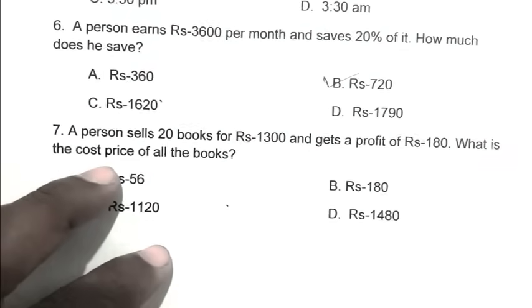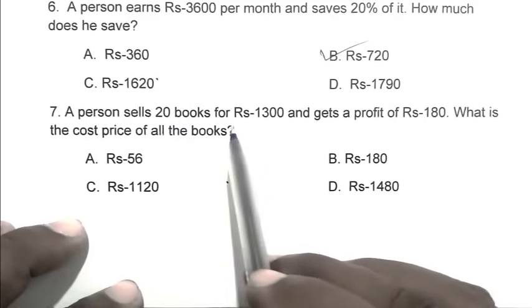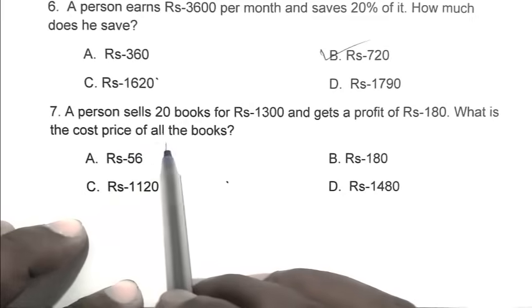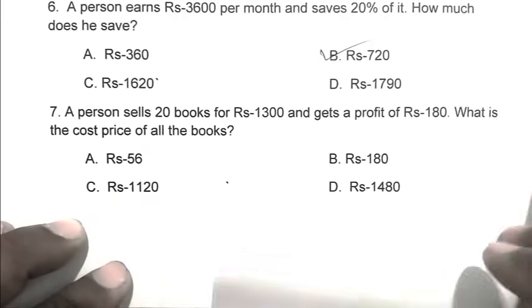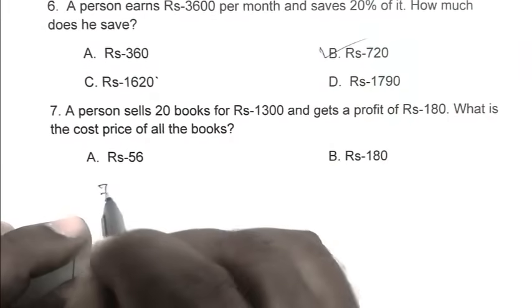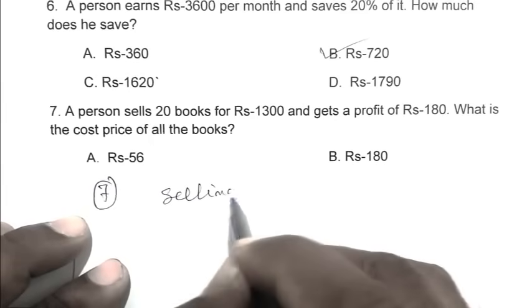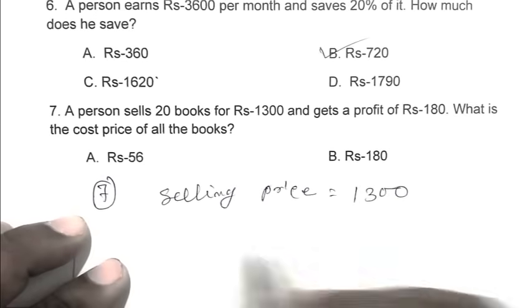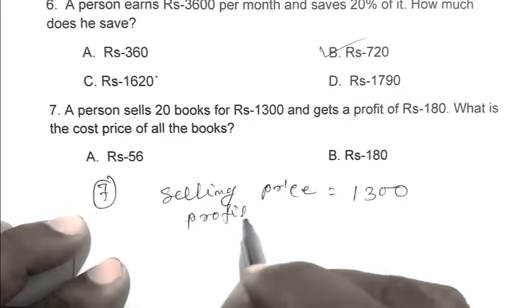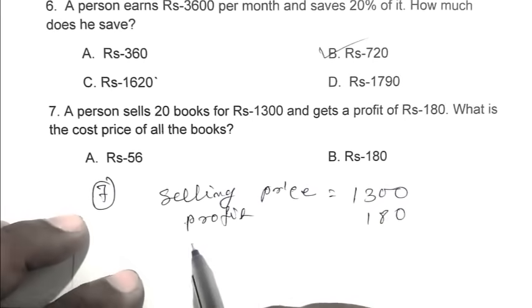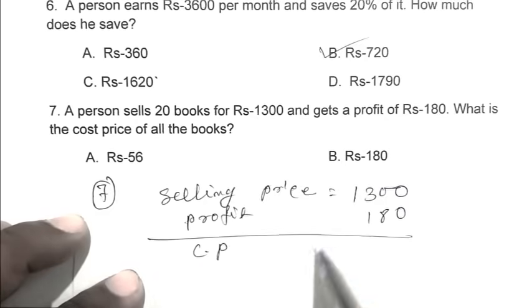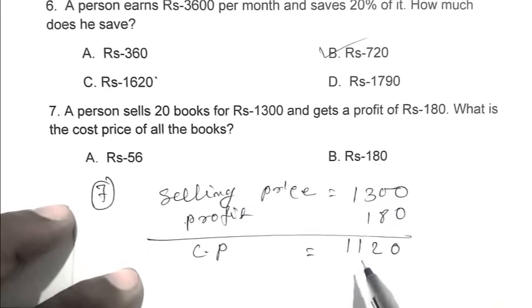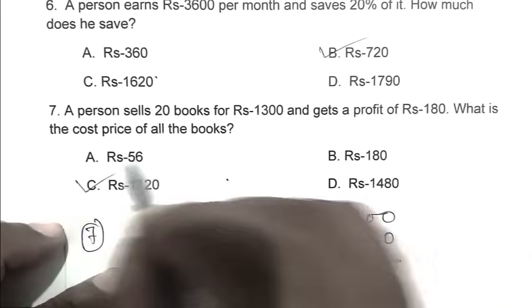Question number seven: a person sells 20 books for rupees 1300 and gets a profit of rupees 180. What is the cost price of all the books? Selling price is 1300, profit is 180. So cost price, we subtract: 1300 minus 180 equals 1120. So C is the right answer.